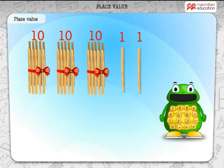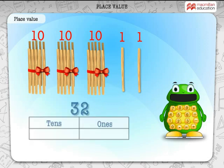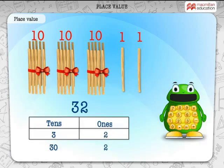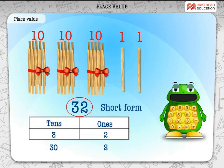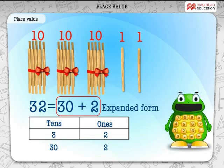You have to count the tens and then count the ones. If you do it this way, you are a winner. The place value of 3 in 32 is 3 tens, or 30. The place value of 2 in 32 is 2 ones, or 2. 32 is the short form of the number. 32 is equal to 3 tens and 2 ones, or 32 is equal to 30 plus 2, and this is the expanded form of the number.